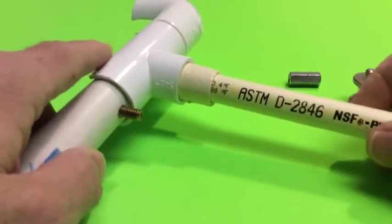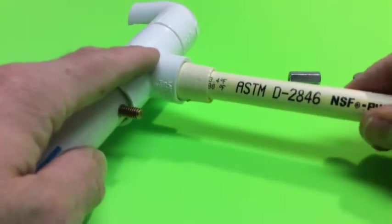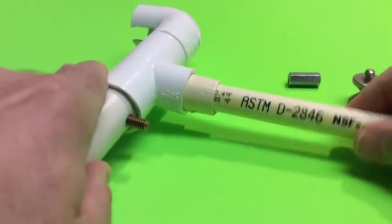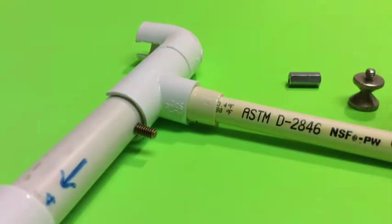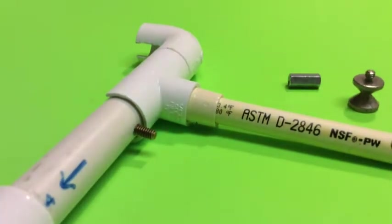One thing you could do too is if it gets too loose, just put a little piece of scotch tape in there to wedge it in a little bit. That way you don't have to glue anything and it's not permanent so you can kind of use it over and over.